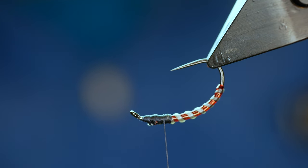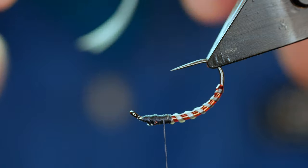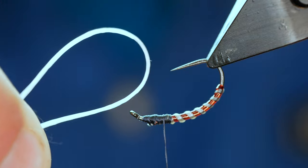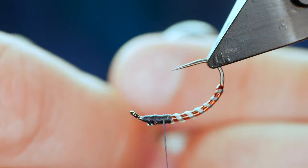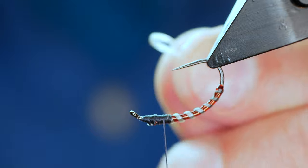Now once the vice is inverted what I want to do is add another little bit of flexi floss. I'm going to fold it in half like so and I'm going to snip it.